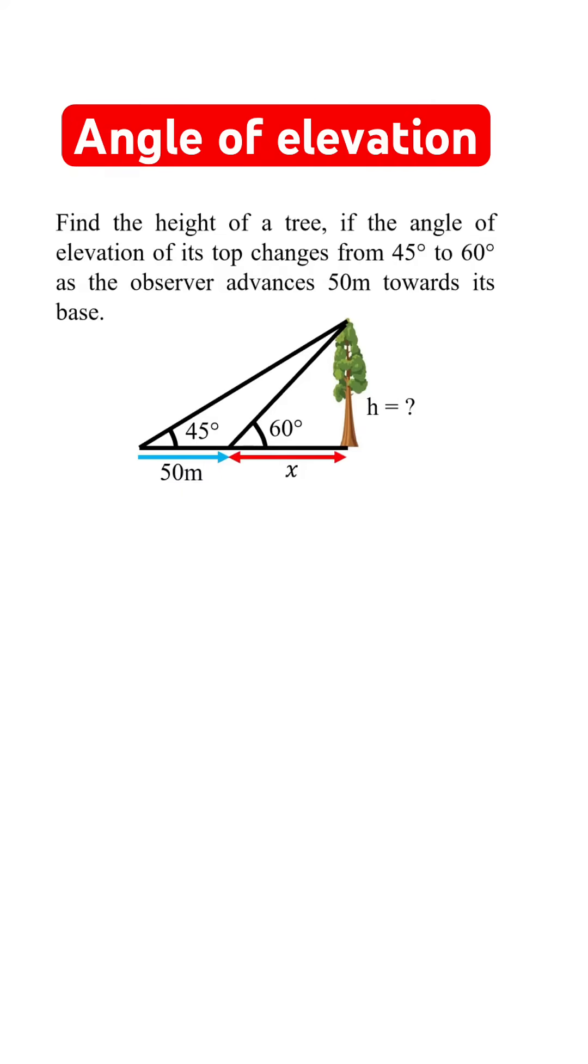Let's say this distance be x. The tangent of an angle is opposite side divided by adjacent side, so tangent 60 degrees is h over x and tangent 45 degrees is h over 50 plus x.